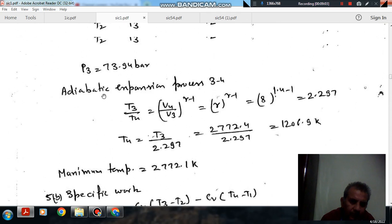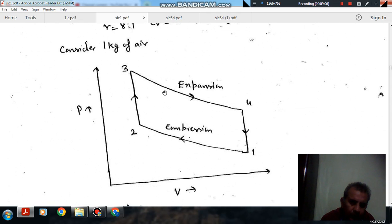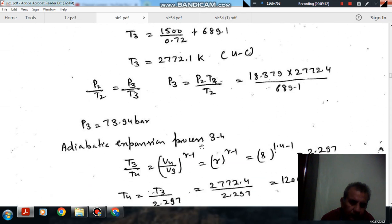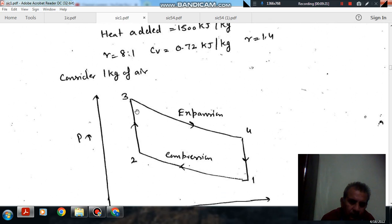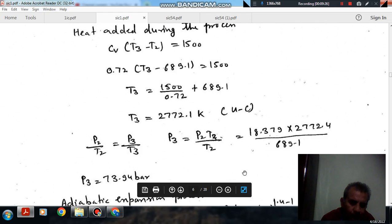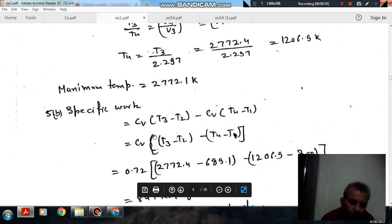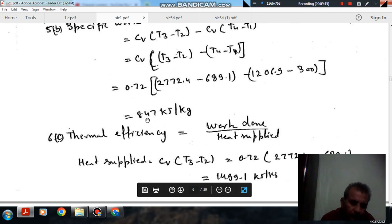And the specific work done is, as work is done during the two adiabatic processes, this is your expansion process, this is compression process. So we will find out the work. So Cv times T3 minus T4 minus Cv times T2 minus T1. So we have all the temperature. We have T3, we have T2, we have T4, we have T1. So by this, we find out work that is 847 kJ per kg.